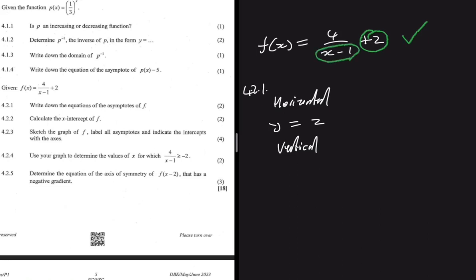The vertical asymptote will be where the denominator equals zero, because we cannot divide by zero. If we equate the denominator to zero, we find an x-value for which the graph never touches. So we have x - 1 = 0, which gives us x = 1.